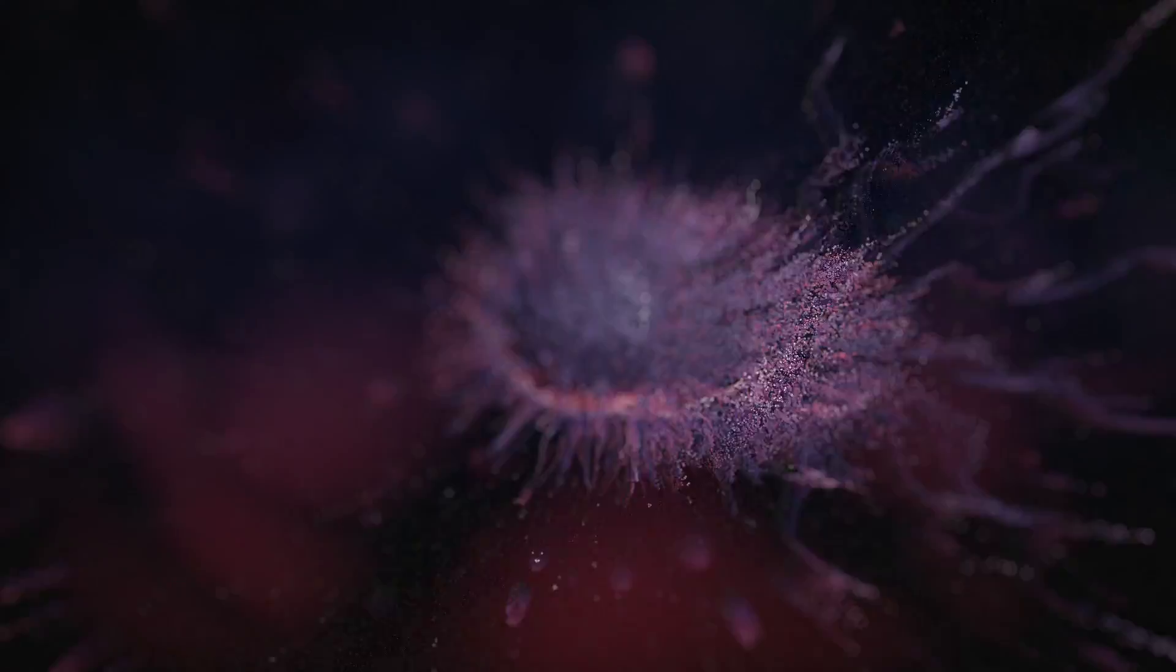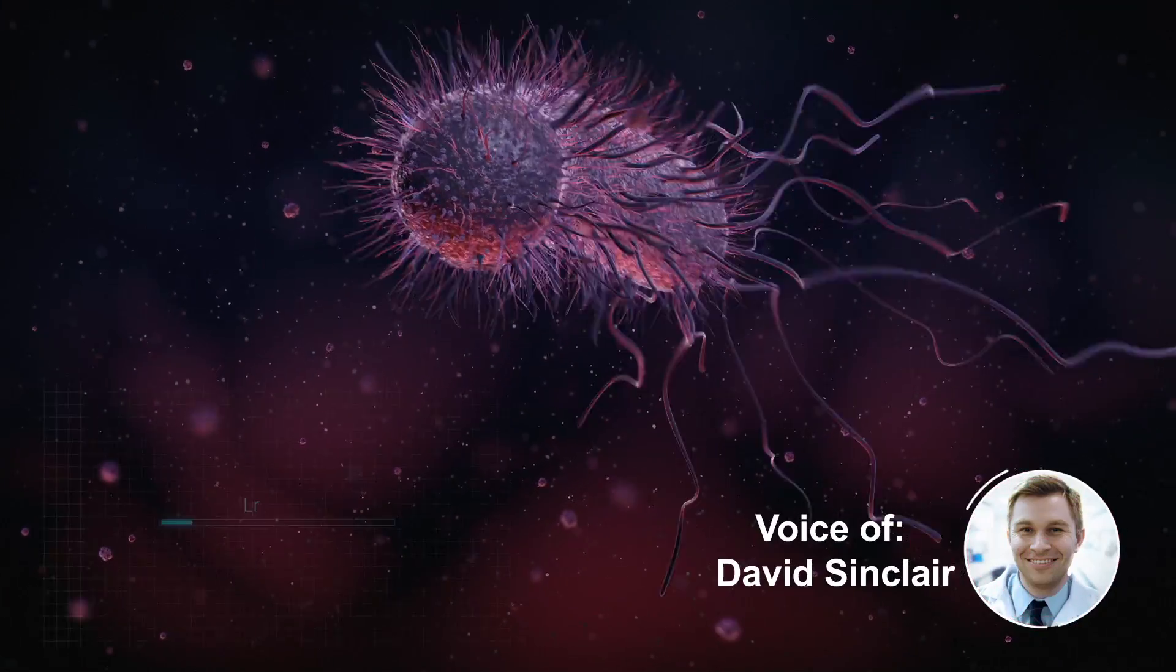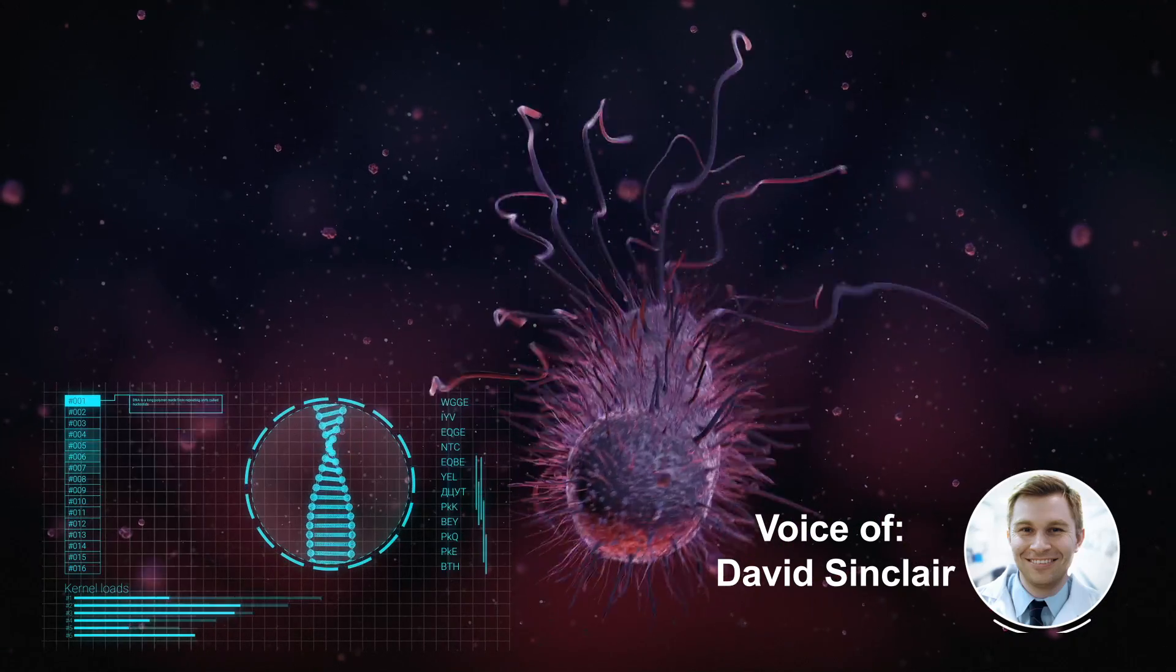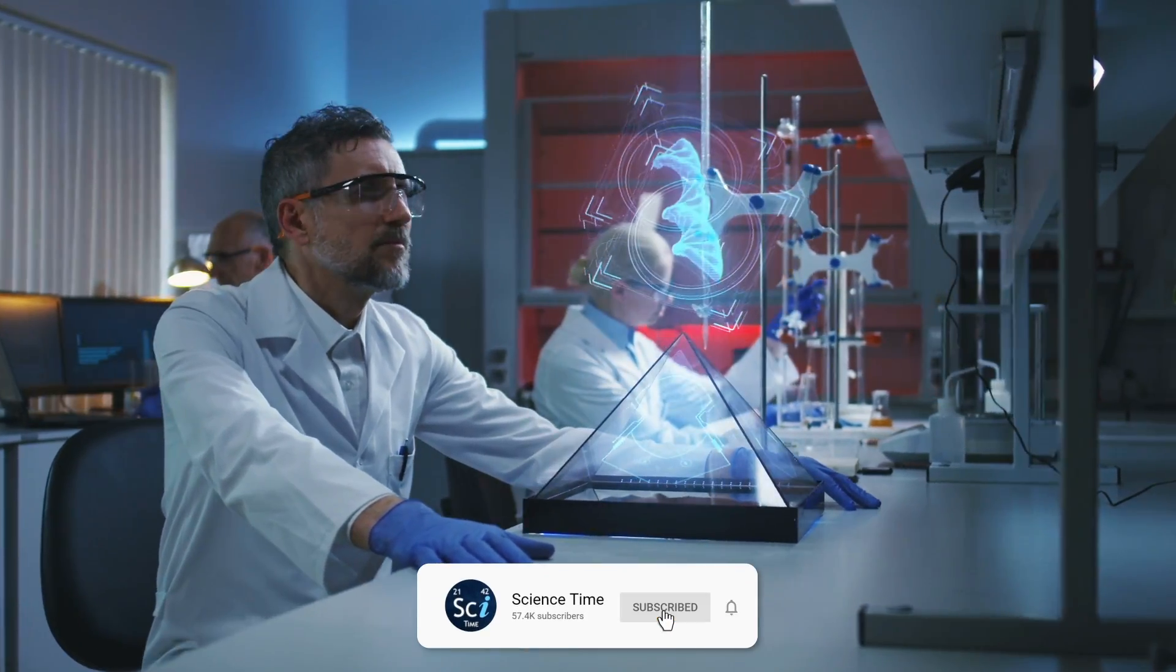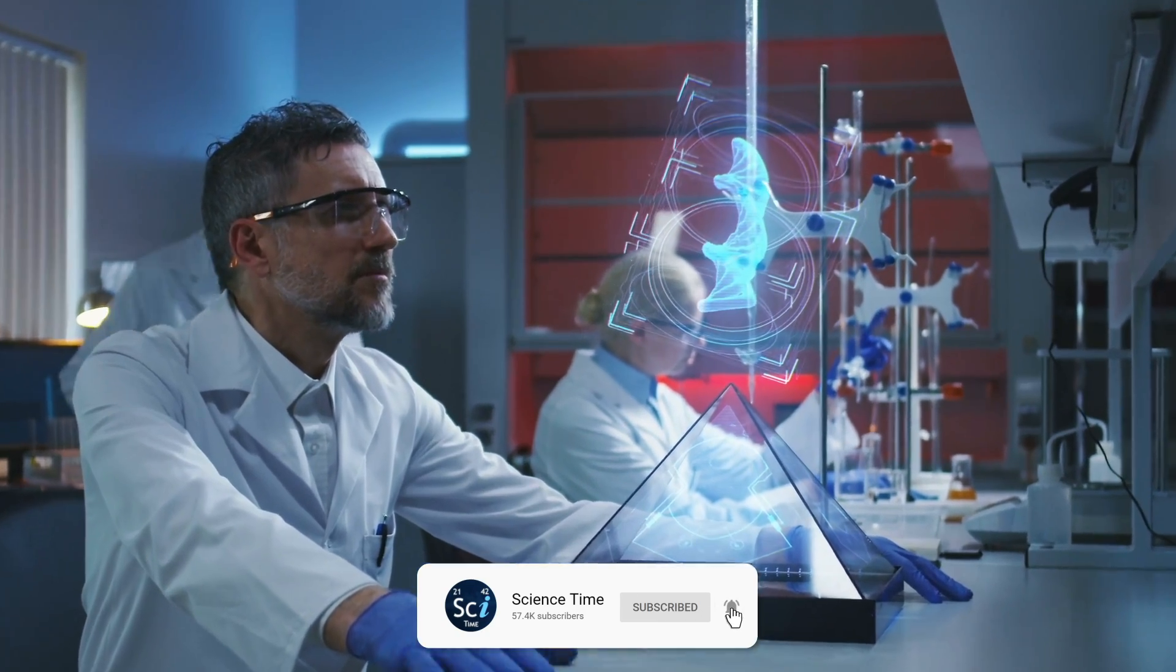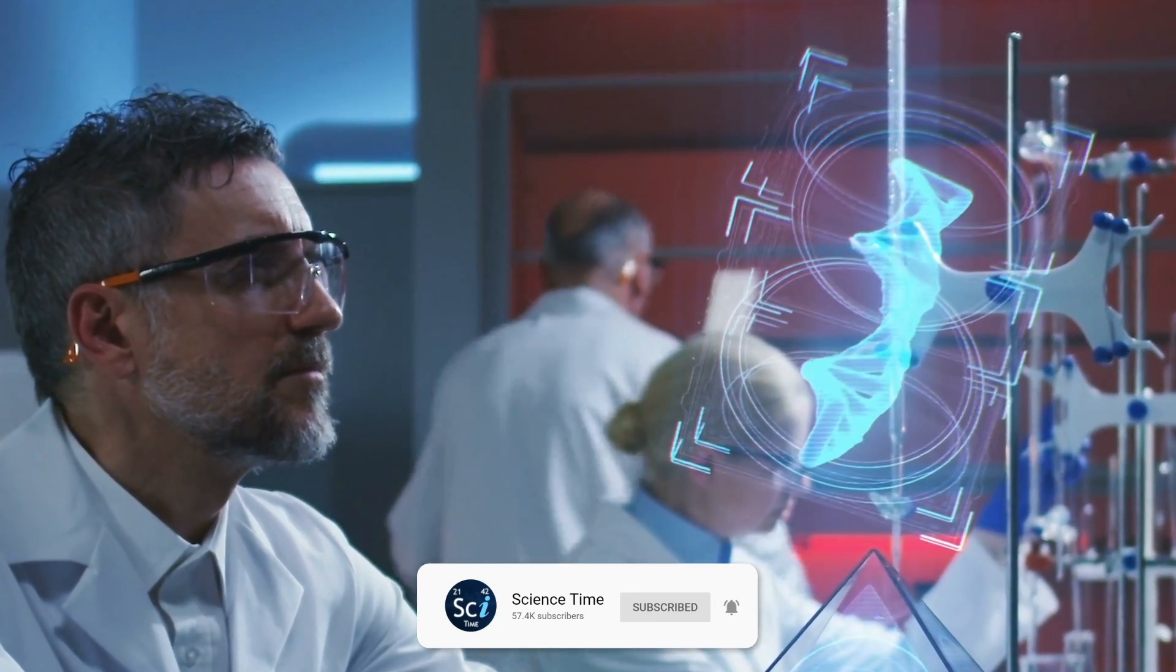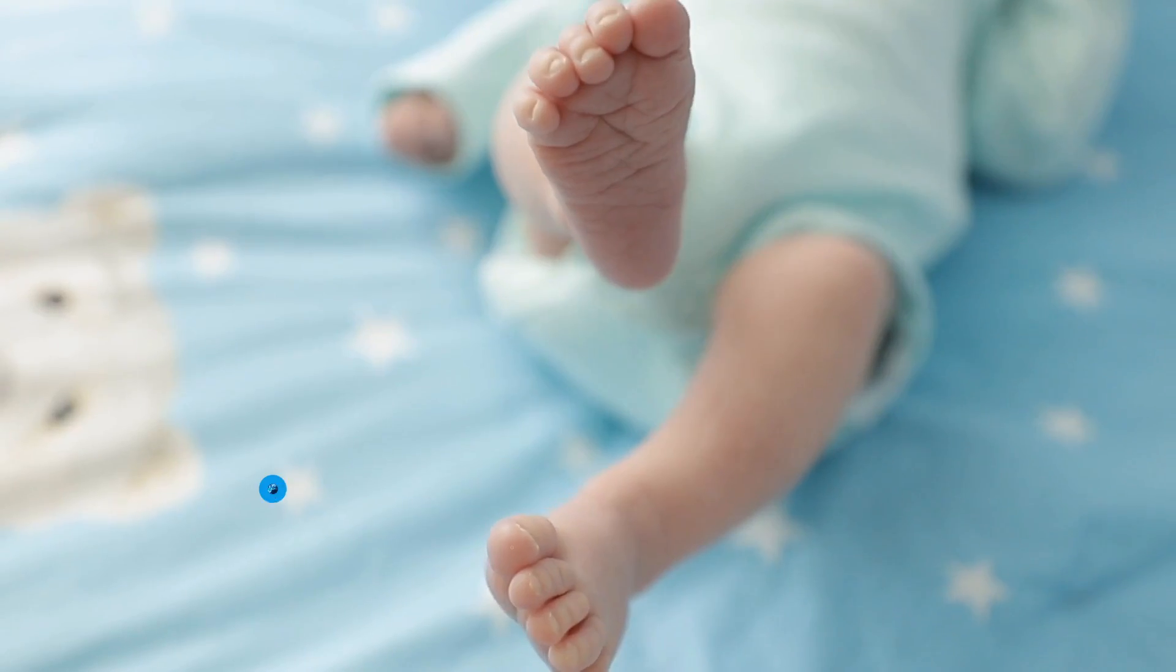CRISPR is a term for a bacterial immune system that cuts invaders and their DNA. What we've done now as scientists is utilize that system, take it out of the bacteria, and use it to create designer mutations and designer gene changes in animals and also in humans.